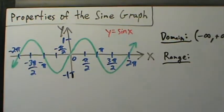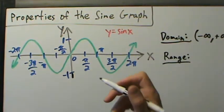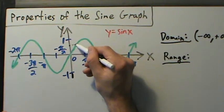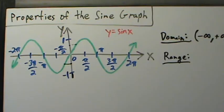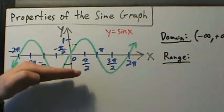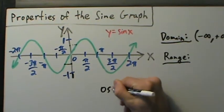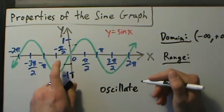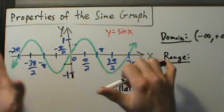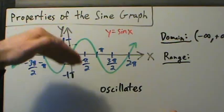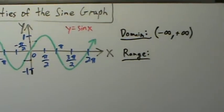For any y value between negative one and one, you're going to have a corresponding point on the graph. For example, if I pick this y value right here, I can go over and find a corresponding point on the graph. The graph just oscillates — it constantly bounces back and forth between negative one and one. Since it's oscillating and continuous — no holes, no breaks, no jumps, no gaps — it just moves continuously from negative one to one and back. So we do hit every value in between. The range is from negative one to one.